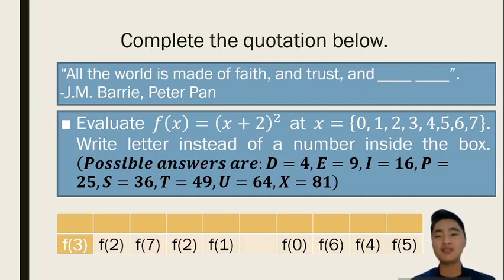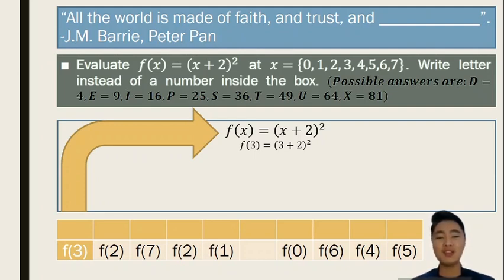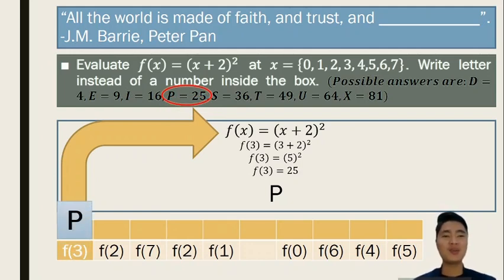For the first letter of the first word, we have f of 3. We can simplify that by replacing the x's of the f of x with 3. Let's try that. So f of 3 is equal to 3 plus 2 quantity squared. Again, we have here an exponent and a parenthesis. Which one comes first? Very good is the grouping symbol first. Therefore, we will have 3 plus 2 first before doing the exponents. 3 plus 2 is 5 squared. Simplifying that would give us 25. And among the letters here, we can see that that is letter P. That's why we can have the first letter as the letter P. We are getting closer to our answer.